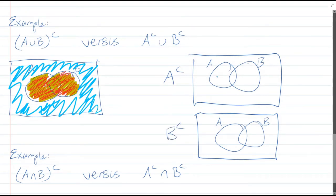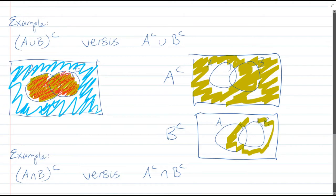So A complement is everything that's not inside A. So it's all this. The second one is B complement, so it's everything that's not in B.